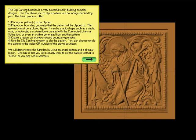The basic process is this. One, place your patterns to be clipped. Two, place the boundary geometry that the pattern will be clipped to. This geometry pattern must be a closed figure — a circle, square, any shape — but the lines have to meet all the way around. It can be an auto shape such as a circle, oval, or rectangle, but it can also be a custom clip of one sort or another.